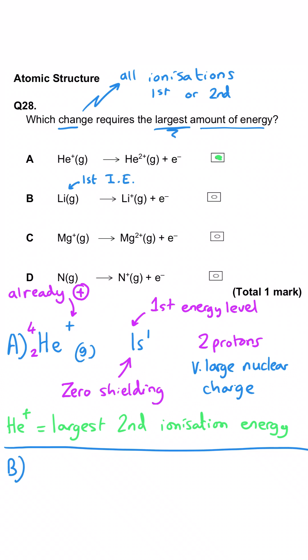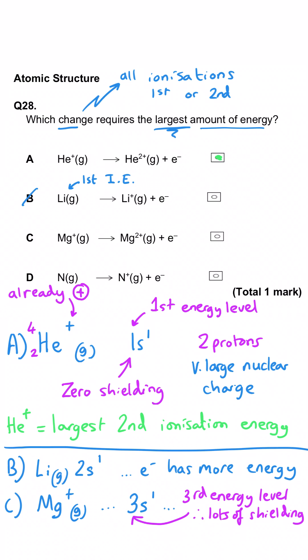B is much less energy because we're removing it from a 2s subshell. C is going to be much lower still because removing it from a 3s subshell even though the magnesium is 1 plus it's still going to be significantly less than A and D is going to be lower than A as well because we're removing from a 2p subshell rather than the 1s and that's got much higher energy so it's easier to remove.